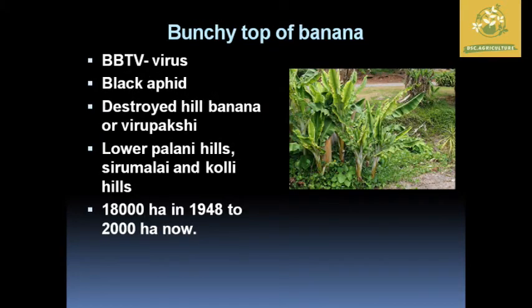Bunchy top of banana is mainly caused by Banana Bunchy Top Virus (BBTV), with the black aphid as the main vector. It destroyed hill bananas as well as Virupakshi bananas in the Lone Plain Hills, Sirumalai, and Kolli Hills. Around 8,000 hectares in 1948 was reduced to 2,000 hectares of hill banana production.